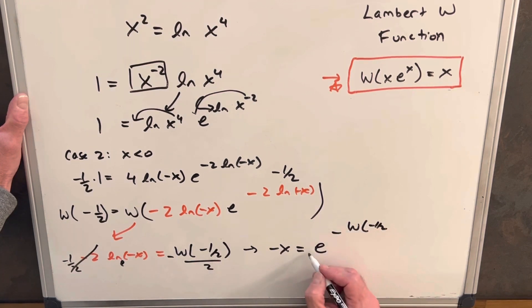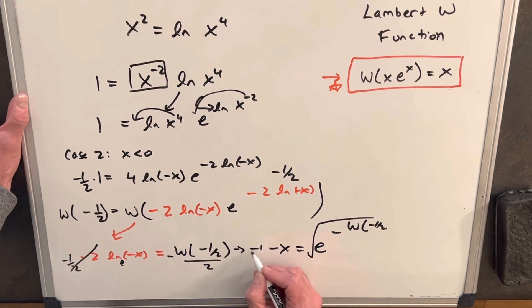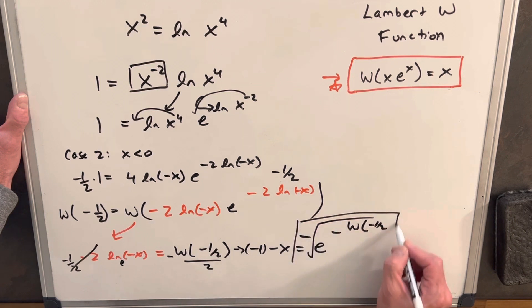Again, I'll take my half and write it as a square root. I'll multiply by negative 1 on both sides. So we'll have a negative there. So we're left with x is going to equal this thing.